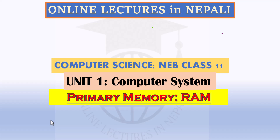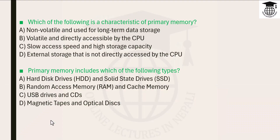So from this tutorial, we will start with primary memory. First, we will cover RAM and its types. RAM stands for Random Access Memory.